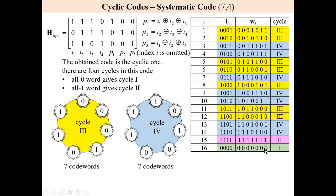This code is the systematic one. We have four cycles. This one is trivial. The second one is also trivial. And two other cycles give seven codewords, as presented in this table. Then this code obtained from the Hamming code by permutation of columns, giving the systematic code, which is the cyclic code.